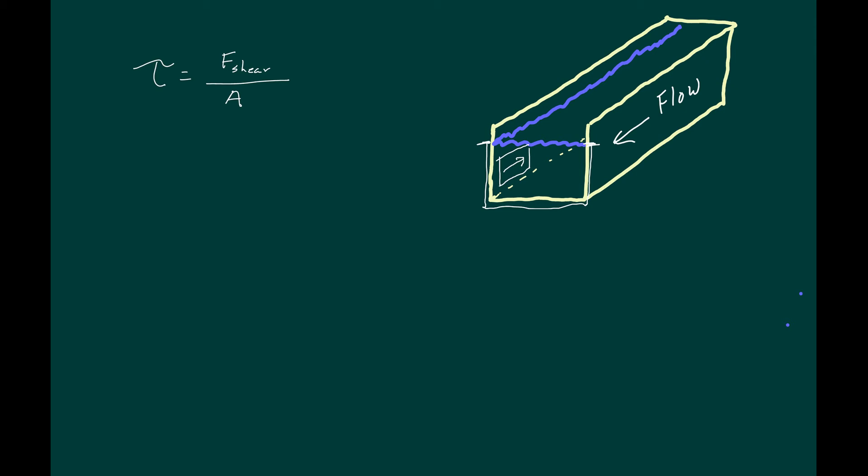Wetted perimeter is referred to as capital P and again we'll talk about the length which is the length of the channel under consideration. We're rearranging the equation F shear equals